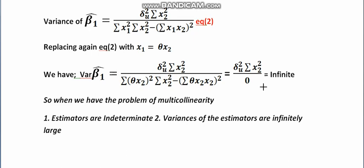Since the denominator is 0, if we divide any number by 0, mathematically we get infinity. So the variance of beta 1 hat becomes infinite. Similarly, for the variance of beta 2 hat, if we replace x1 with theta x2, the denominator again becomes 0, so the variance of beta 2 hat will also be infinite.